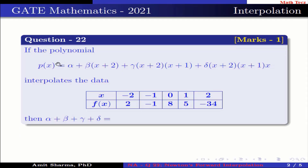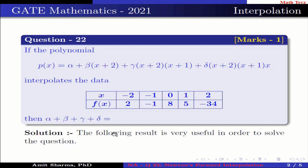The question is: if the polynomial P(x) = α + β(x+2) + γ(x+2)(x+1) + δ(x+2)(x+1)(x) interpolates the data x = -2, -1, 0, 1, 2 and f(x) = 2, -1, 8, 5, -34, then α + β + γ + δ is equal to?